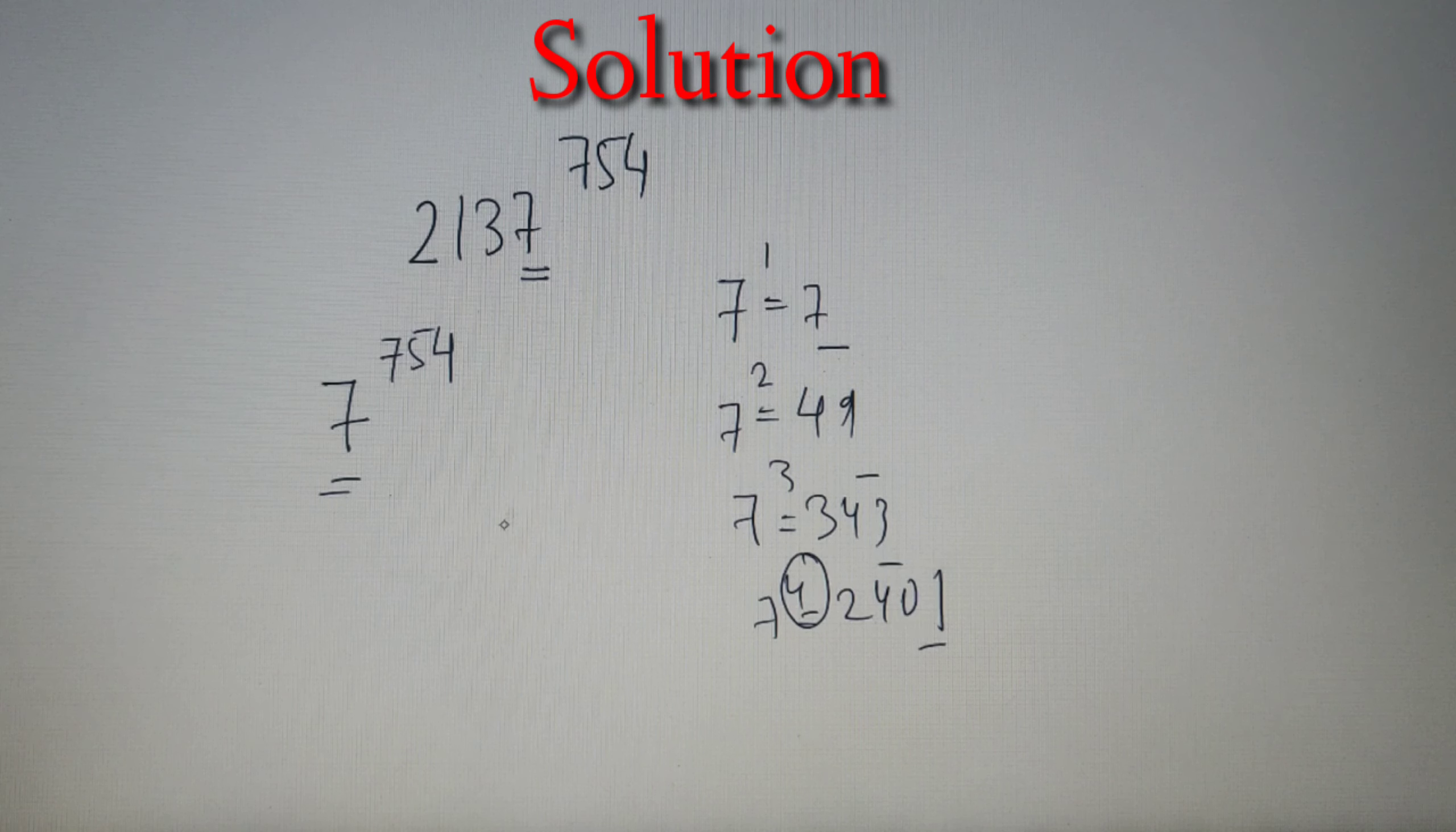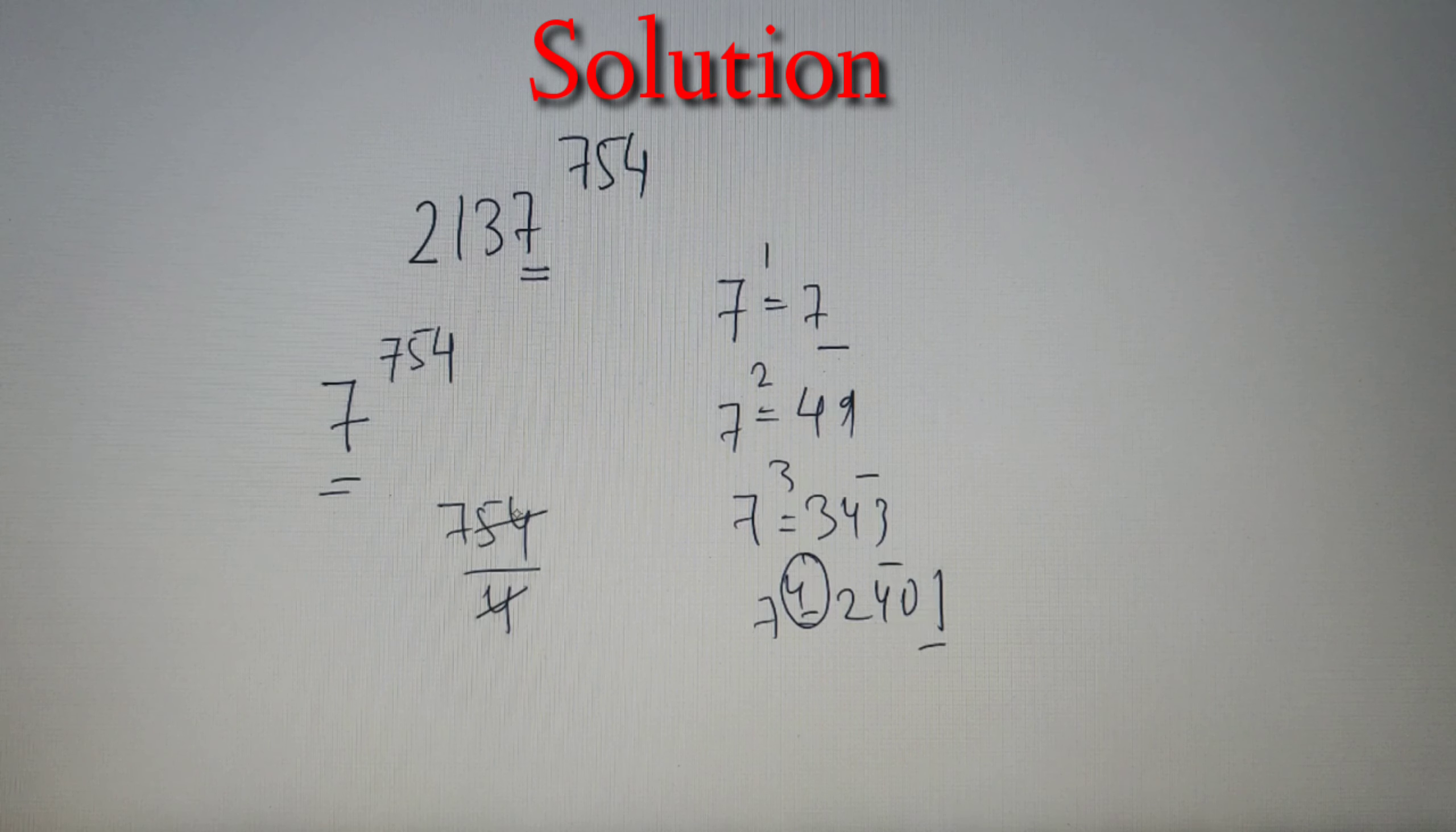So we will divide the number 754 with 4 which is the cyclicity of 7. So 754 by 4 gives the remainder as 2.